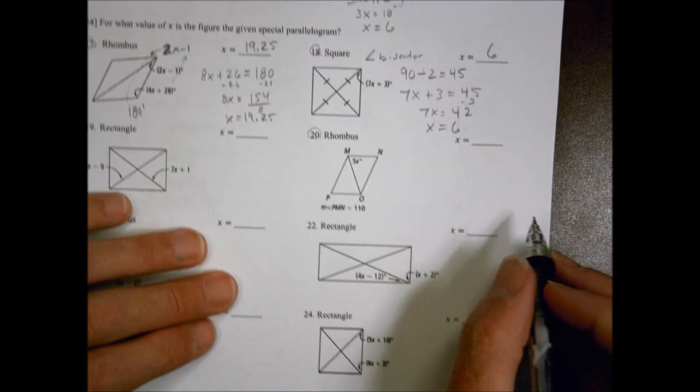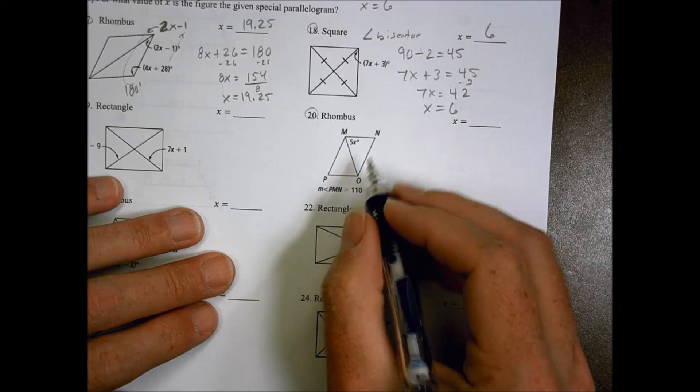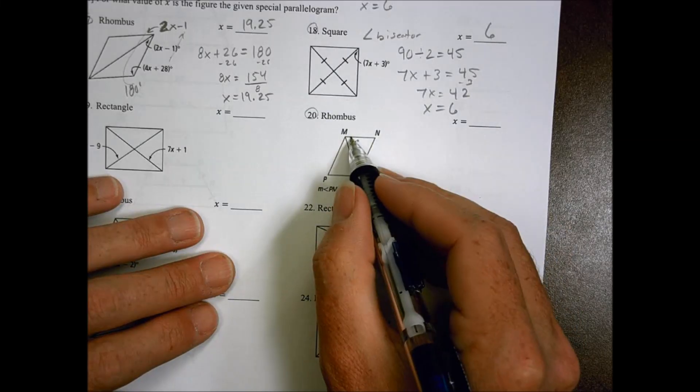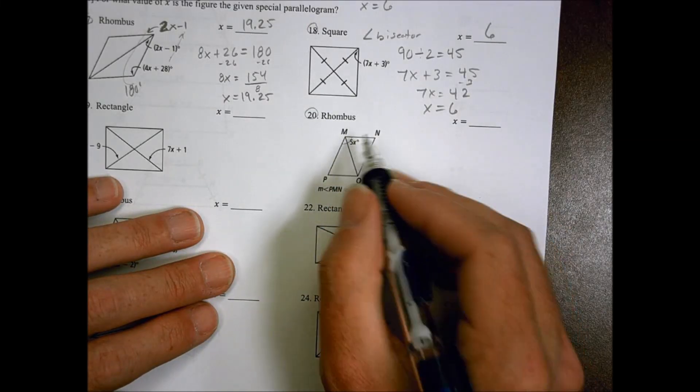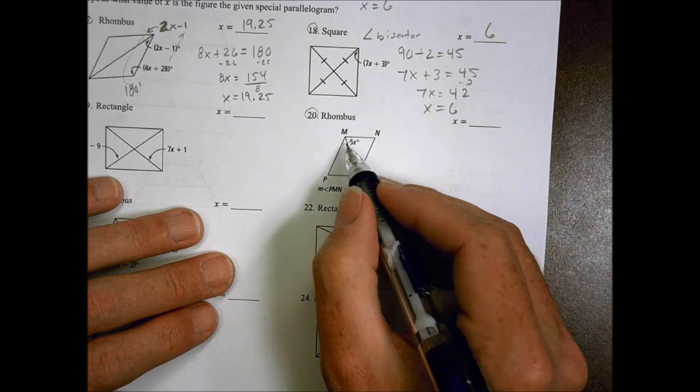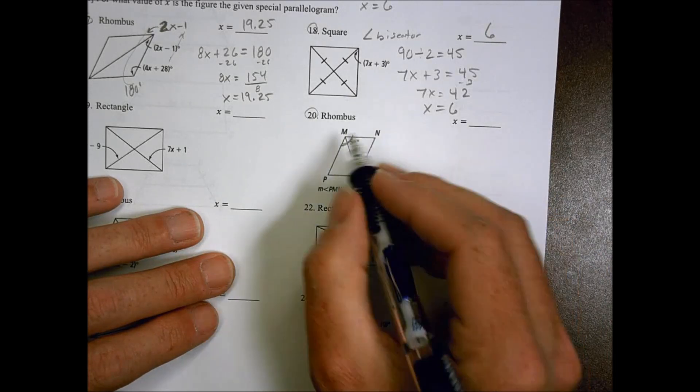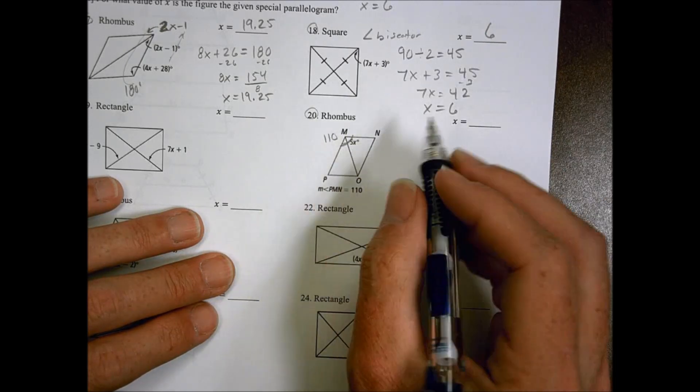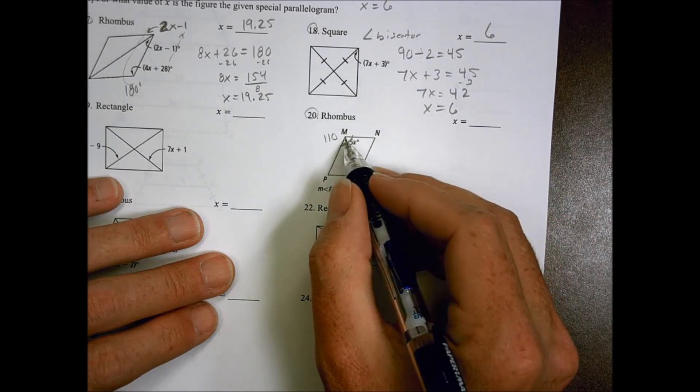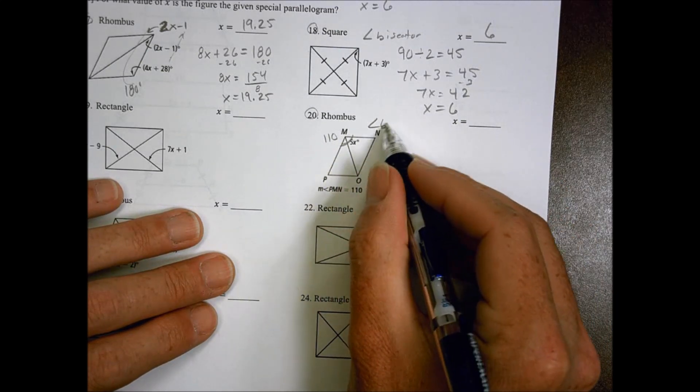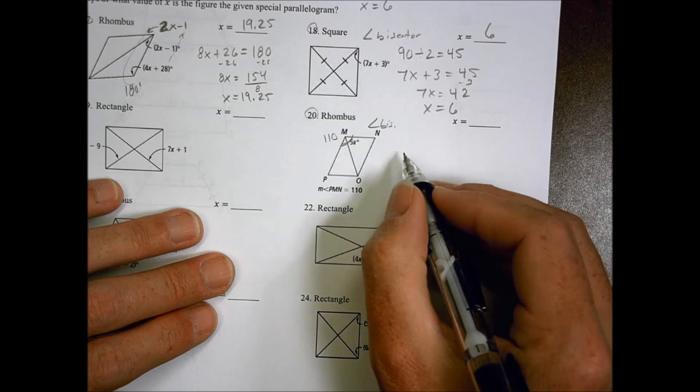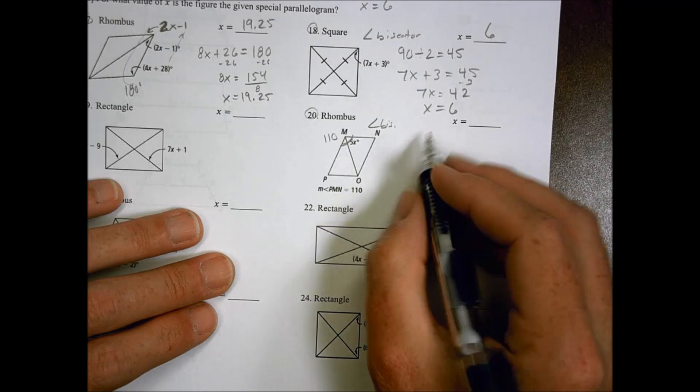Number 20. I have a rhombus here. We want X. This whole thing right there is equal to 110 degrees. Now because it's a rhombus, that means that this is also again an angle bisector. So we can take the 5X. I can think of it this way. I can multiply it by 2.